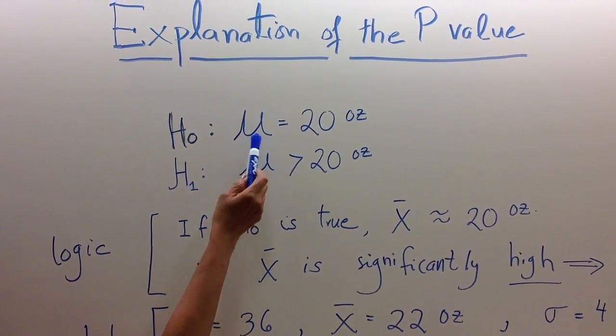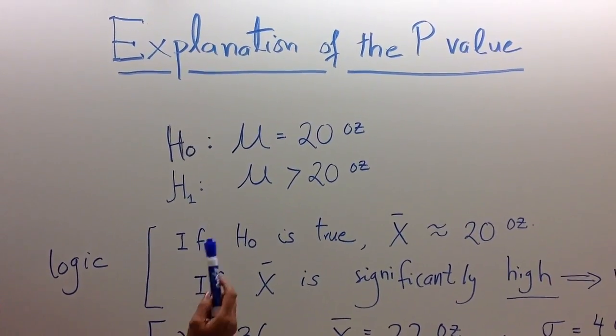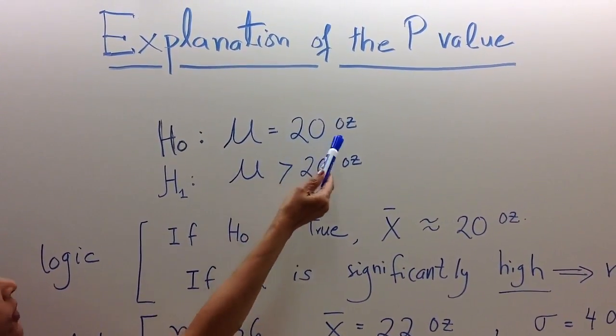So in this example, a null hypothesis is that the population mean, mu, is equal to 20 ounces.